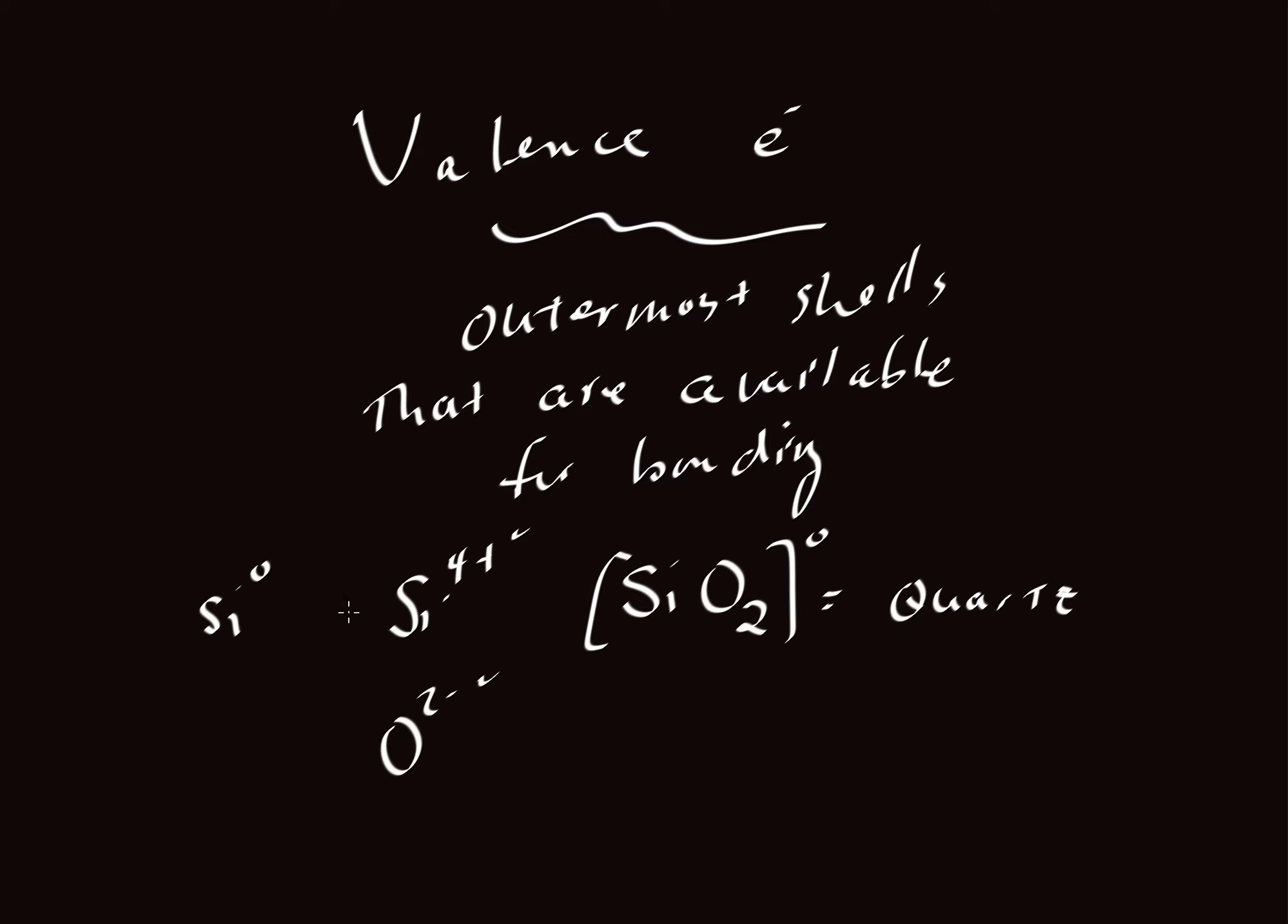So we could talk about this four plus as being the valence state. And then we could talk about oxygen two minus. The two minus charge is the valence state of oxygen.